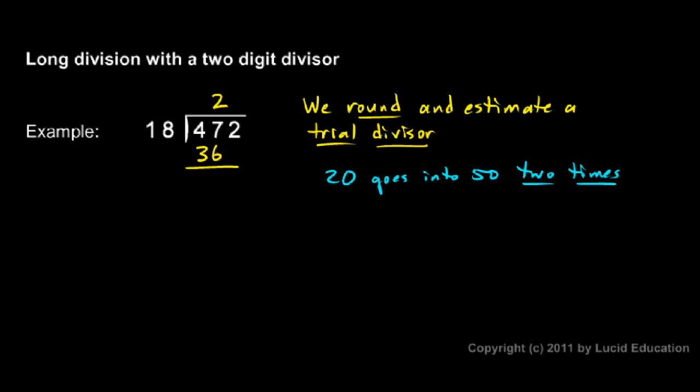And then 47 minus 36 is 11. Now if this number had come out to be bigger than 18, then that would tell me that 18 would have gone into this number more than two times. The fact that this number came out to be 11 is good. If this number ended up being negative, or that is if this number ended up being bigger than the number above it, then that means the number up here was too large.